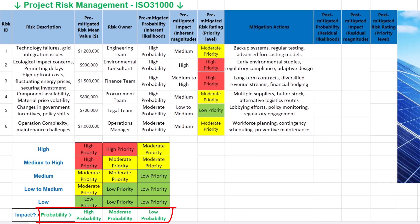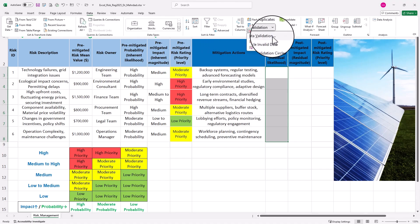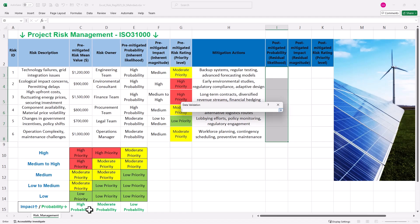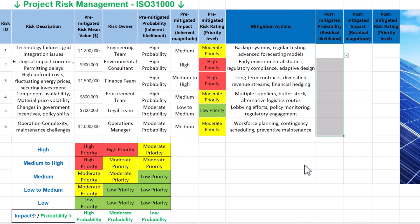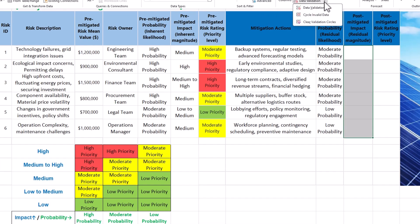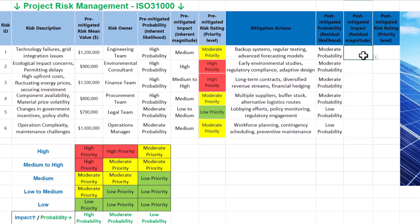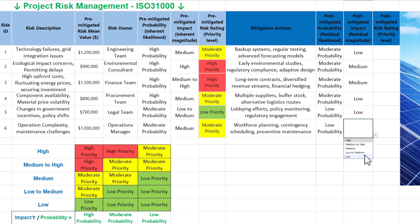Based on our risk matrix, there are three values assigned to likelihood or probability. To minimize human errors in data entry, we use the data validation tool in Excel to create a drop-down menu. Select the relevant cells, navigate to the Data tab, and select Data Validation. Under validation criteria, select List, then specify the data source by selecting our defined likelihood values. Each cell now has a drop-down menu from which residual likelihoods based on our risk matrix can be selected. We follow the same procedure for residual magnitude or impact, specifying the five possible risk impact values. An error message appears if we try to type a value outside the predefined list.